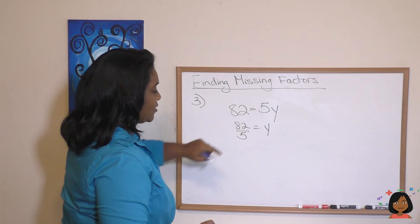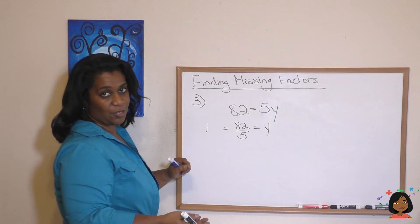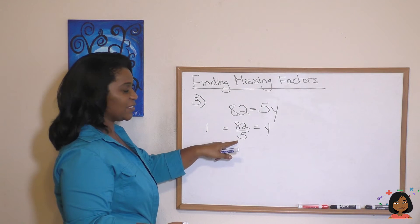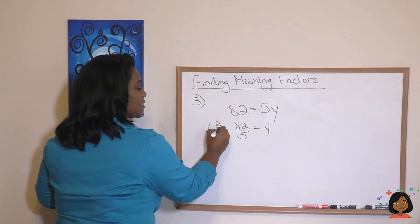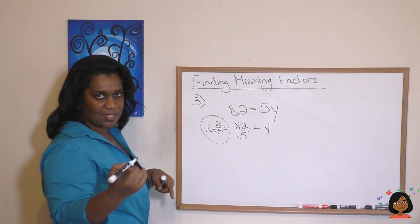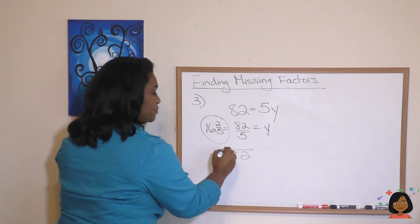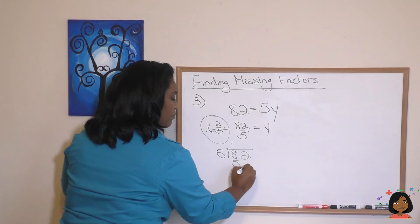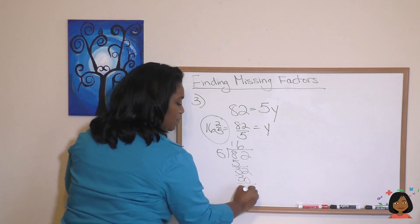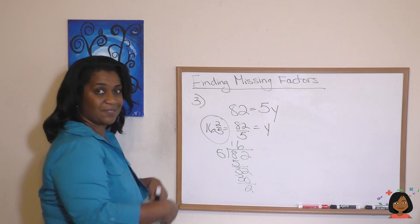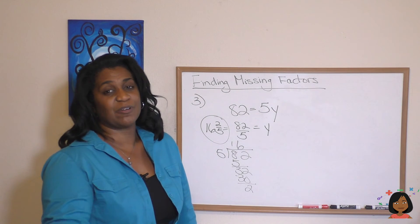5 goes into 8 one time with 3 left over, giving us 32. Then 5 goes into 32 six times with 2 left over. So 16 and two-fifths is your mixed number answer. Let me show the long division clearly: 5 into 82 — one time, 3 left over, bringing down gives 32 — six times, 2 left over. So 16 and two-fifths.